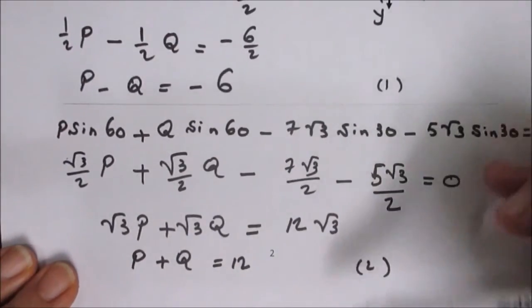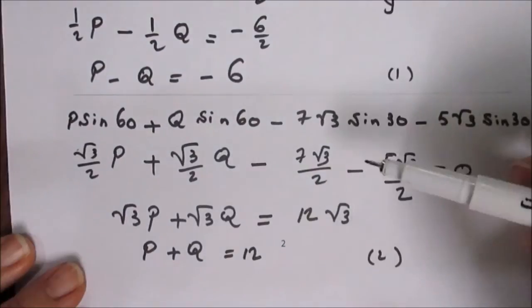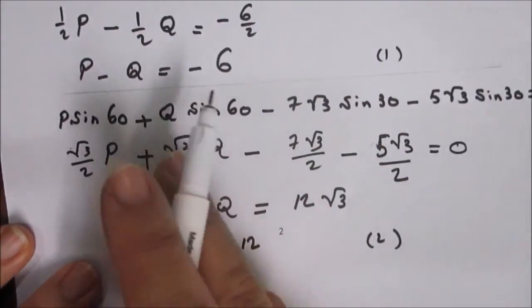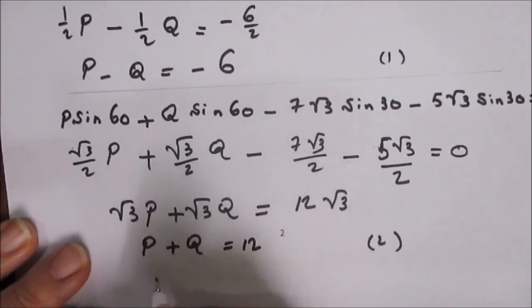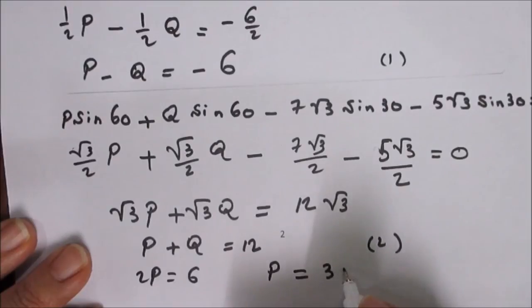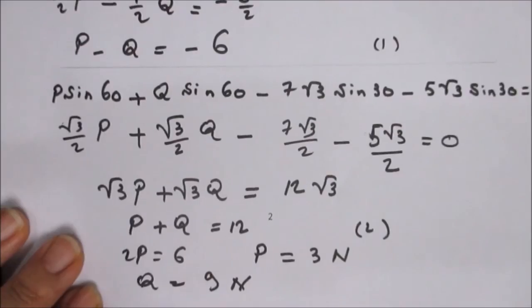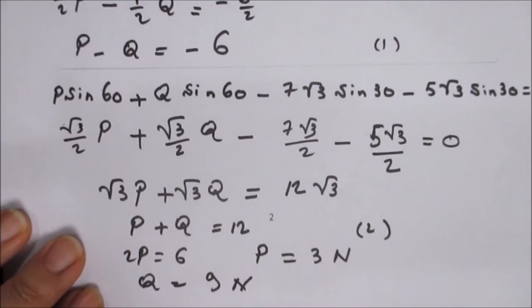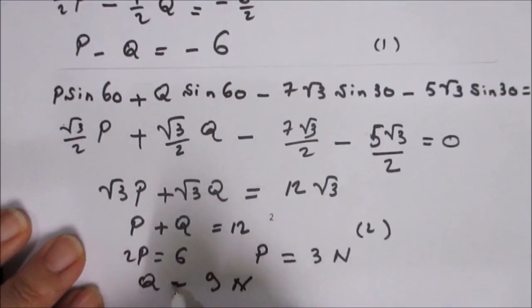We now have two equations. Adding them: 2P = 6, so P = 3 newtons. Subtracting the first from the second: 2Q = 18, so Q = 9 newtons.